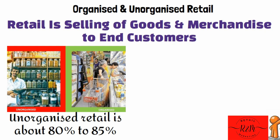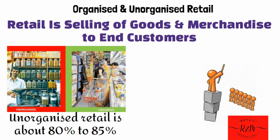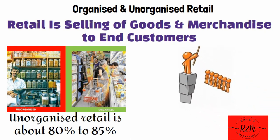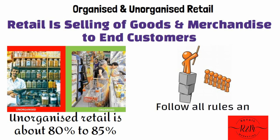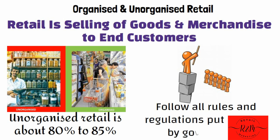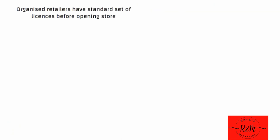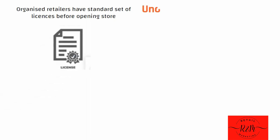Now let us understand the difference between organized and unorganized retailing. The organized retail industry is registered with the appropriate government authority and they follow all the rules and regulations put forward by the government. These organized retailers will have a standard set of licenses before opening any retail store or outlet.